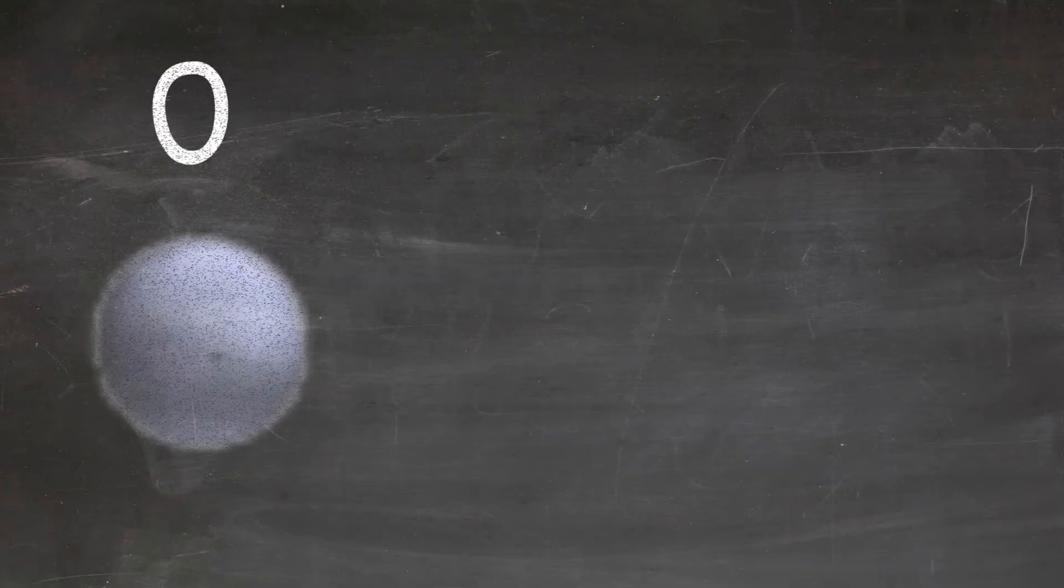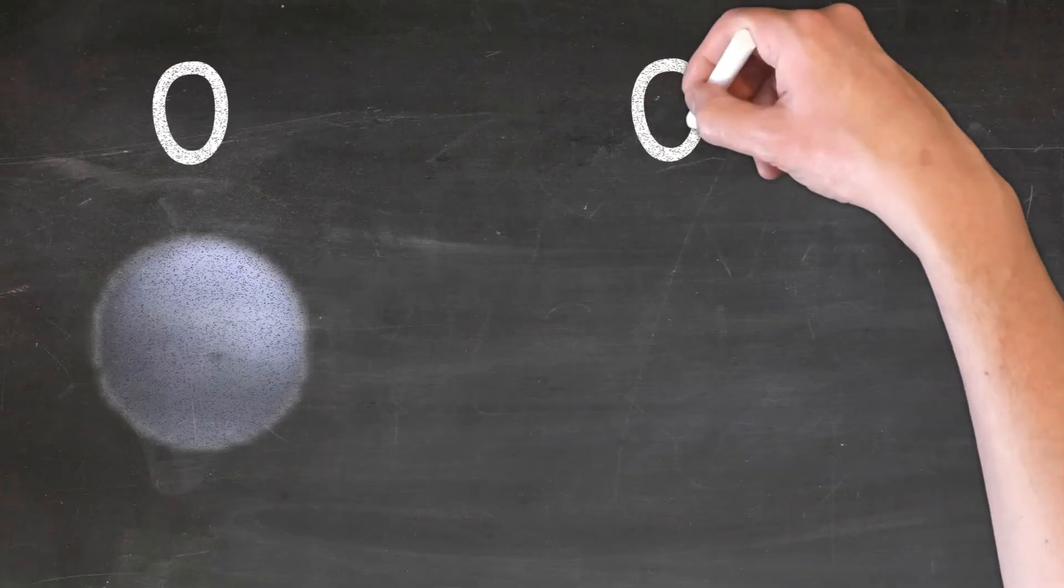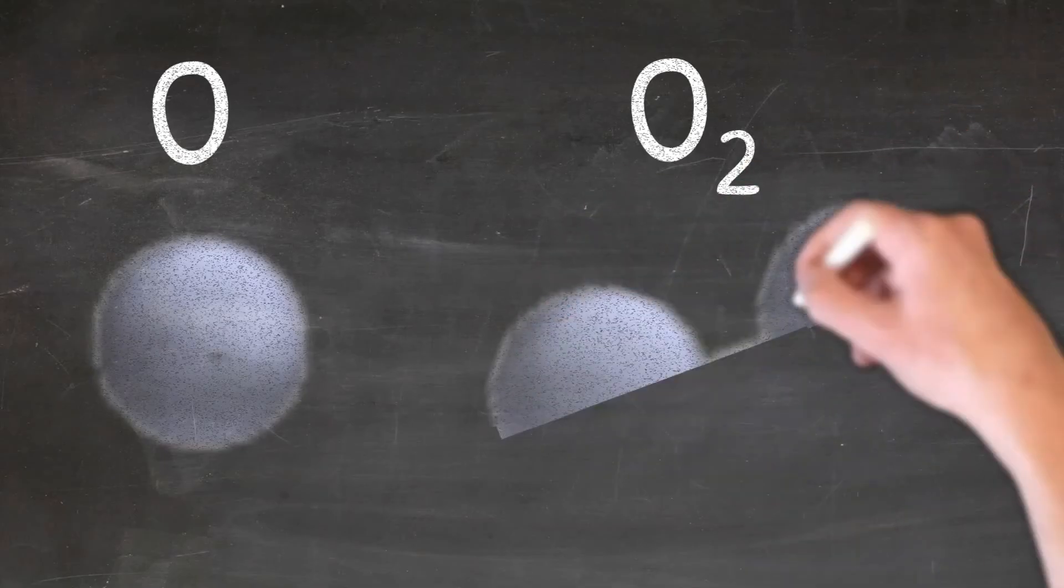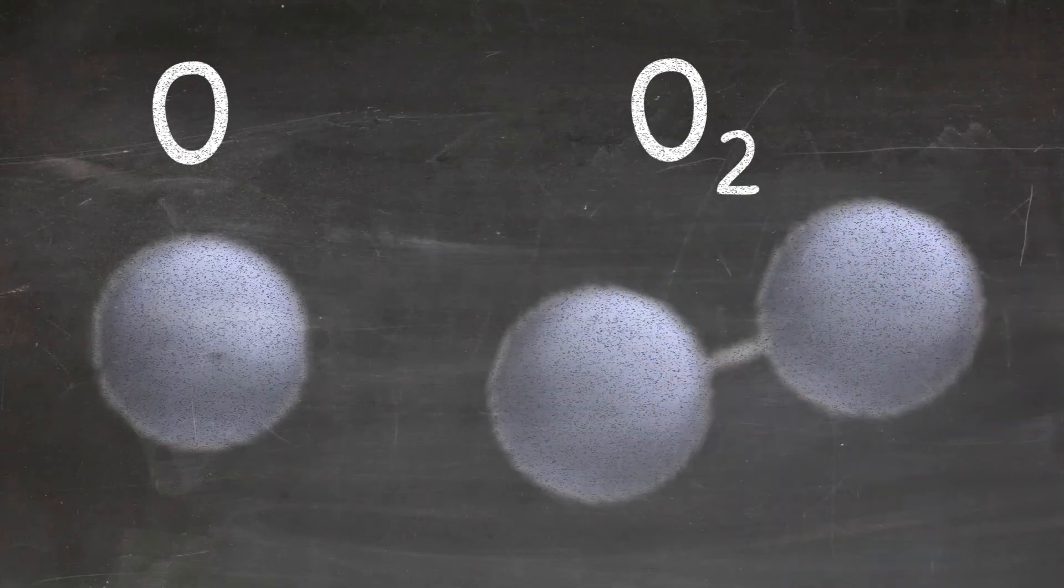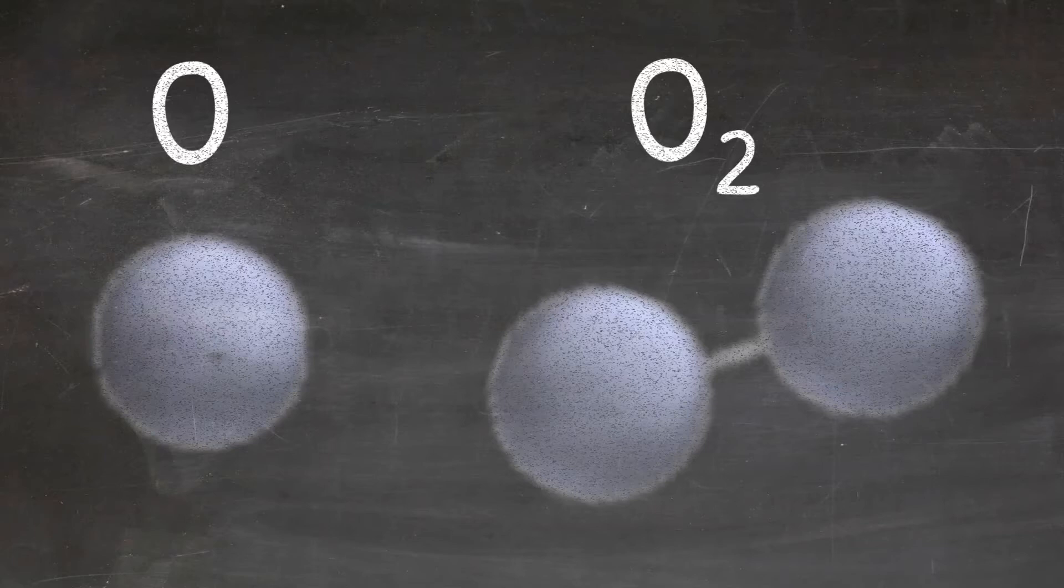One oxygen atom can bond to another oxygen atom to create O2, which is a molecule. This is a molecule because you have two oxygen atoms that are now bonded together. This O2 is the oxygen that is in the air that you breathe every day and that you need to live.